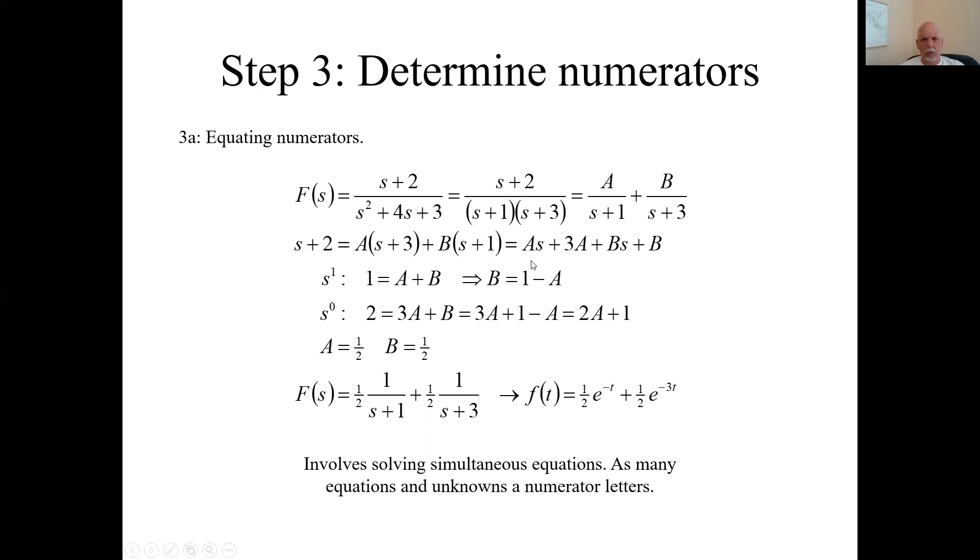Well, this s plus two equals this term. Now we just equate powers of s. It only goes up to s to the one. So one here equals A plus B. Like the equation, s to the zero power would be two equals 3A plus B. At this point, we have two equations and two unknowns. You've got to solve it. Usually you can just do it by substitution, and you find what the two values are.